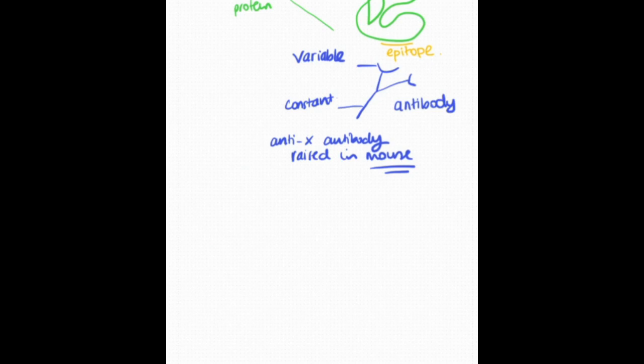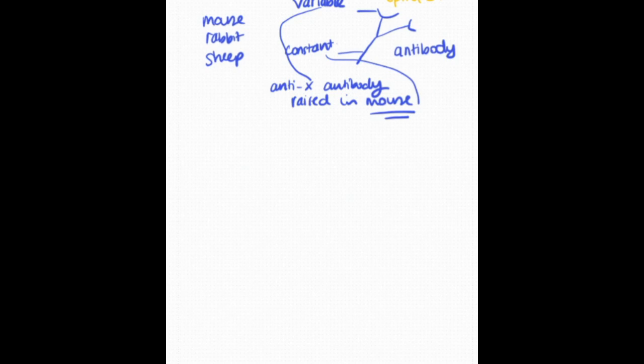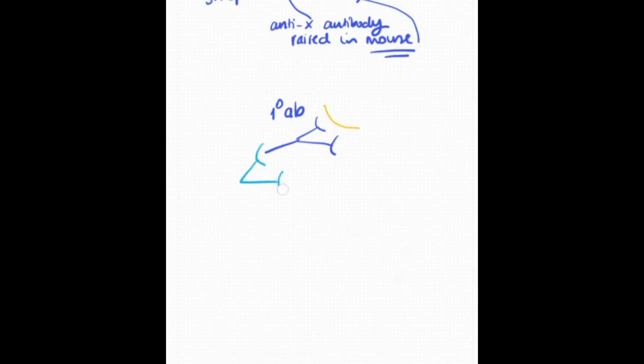In this case, for example, it can be a mouse. The antibody that binds to the protein is the primary antibody. Then we use a secondary antibody which binds to the first one and has a fluorescent tag attached. This is the general idea behind this experiment.